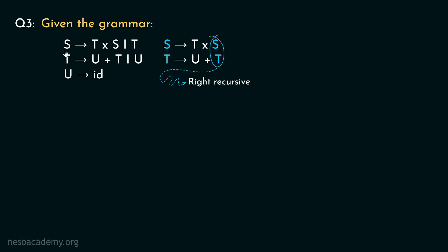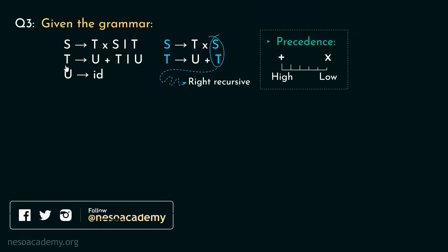Now for this grammar S is the start symbol. So precedence wise plus has higher priority than into. Because S derives into and T derives plus. So definitely plus will always be derived in the lower levels than the multiplication operator.